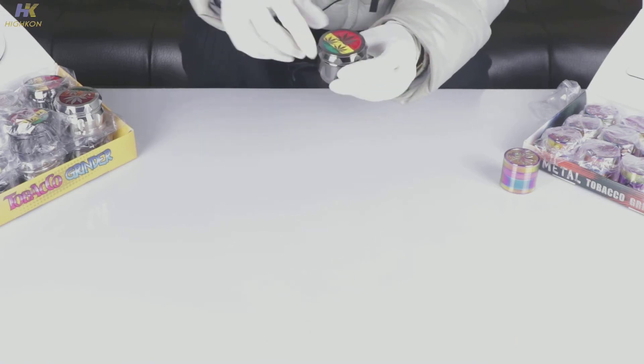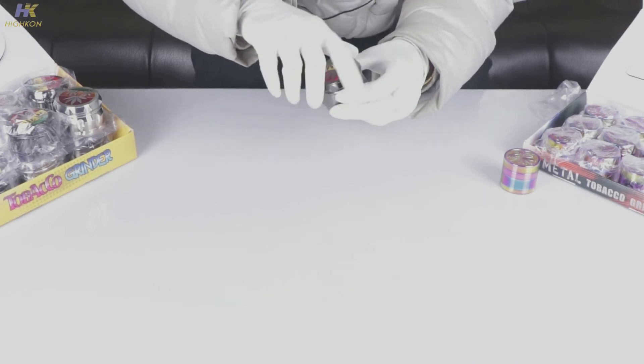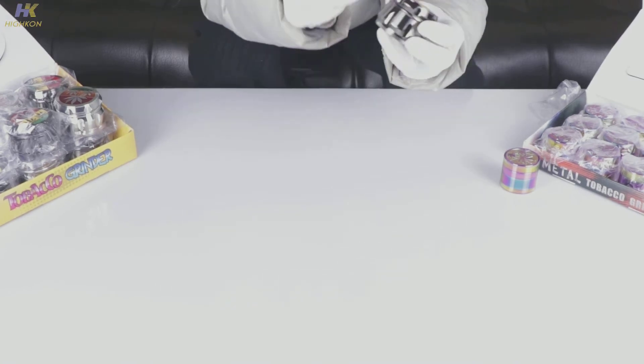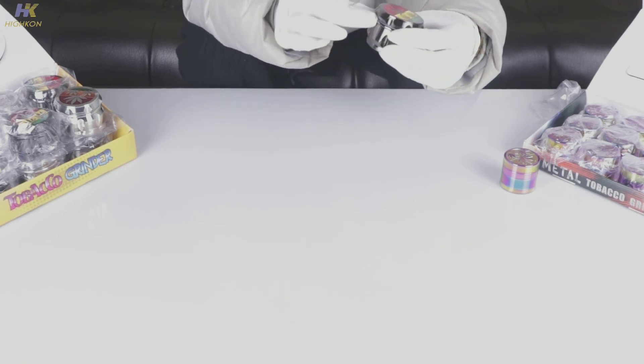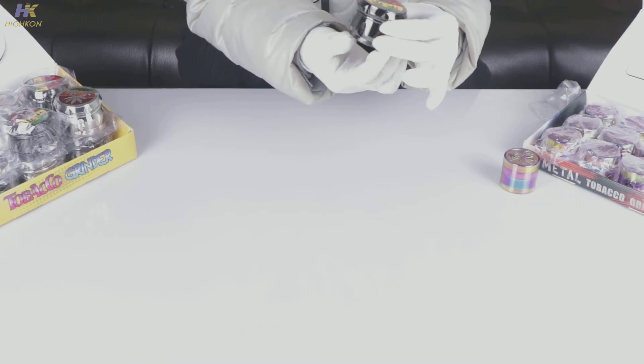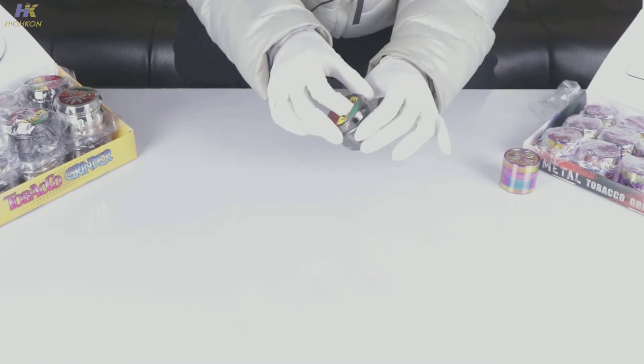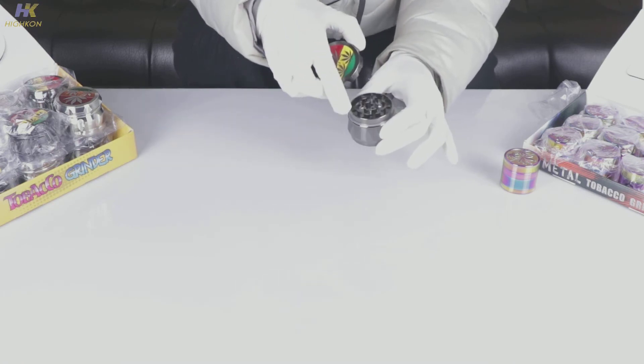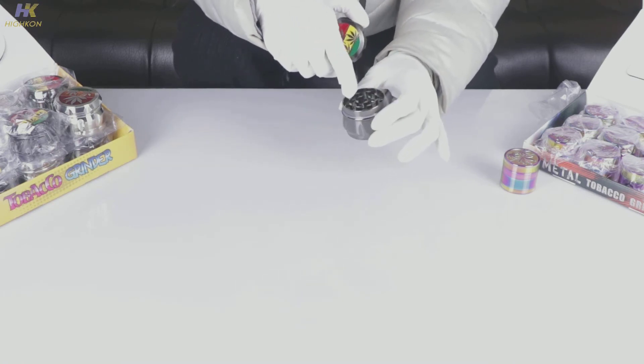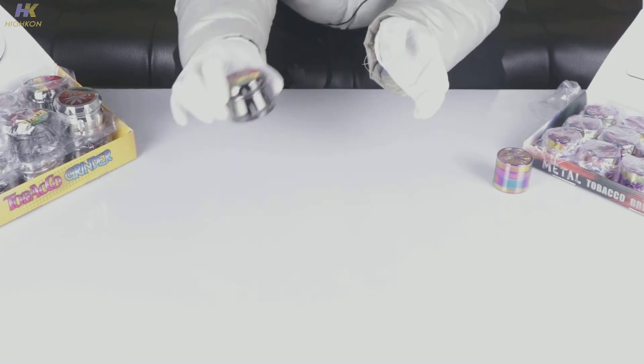After all this process, you just twist the cover to grind the herbs inside, and then the herb will go through the holes at the second layer to the third layer. The smallest ones will go directly to the fourth, to the last part. And when you check, you just open this cover and see there's nothing left on the second layer. It means that this grinder procedure is done. That's about the bigger one.